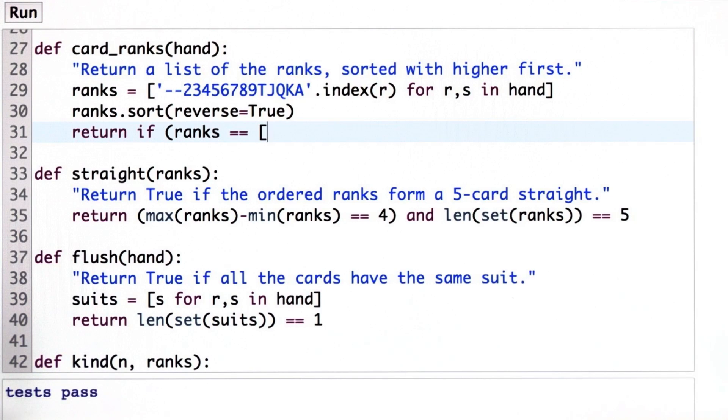and otherwise I want to leave it the same. So if the ranks is equal to this ace low, and we'll fill in that later, if that's the case, then what I want to return is a fix, which is 5, 4, 3, 2, 1.